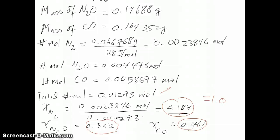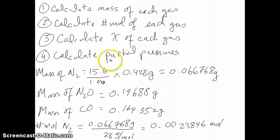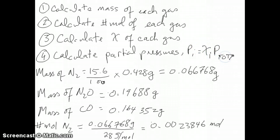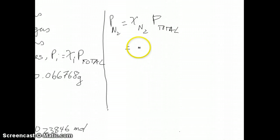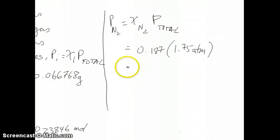Now we continue to the last part: calculating the partial pressure. Remember that partial pressure of gas i equals the mole fraction of i times the total pressure. We now have all the mole fractions, and the total pressure is given in the question. For nitrogen, partial pressure equals 0.187 times 1.75 atmospheres, which gives 0.328 atmospheres.